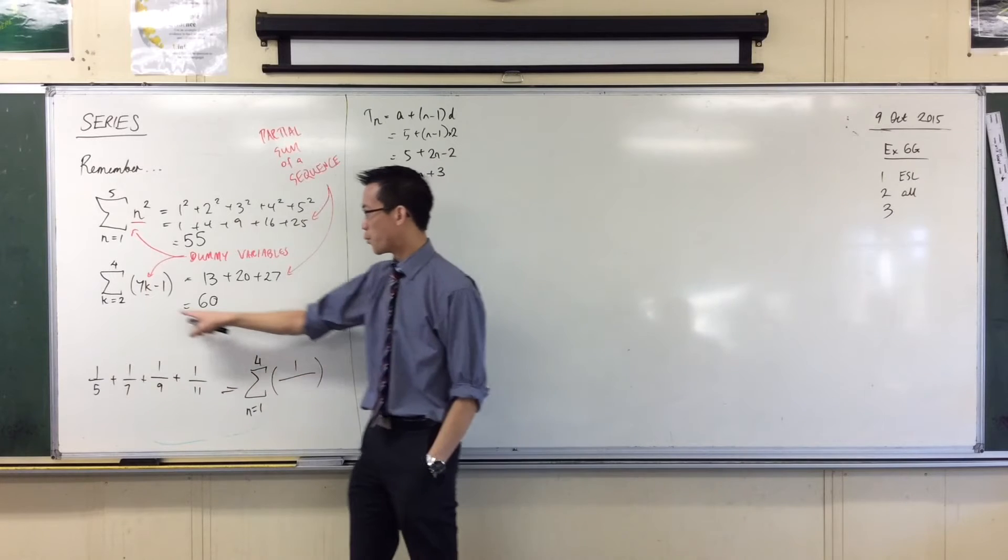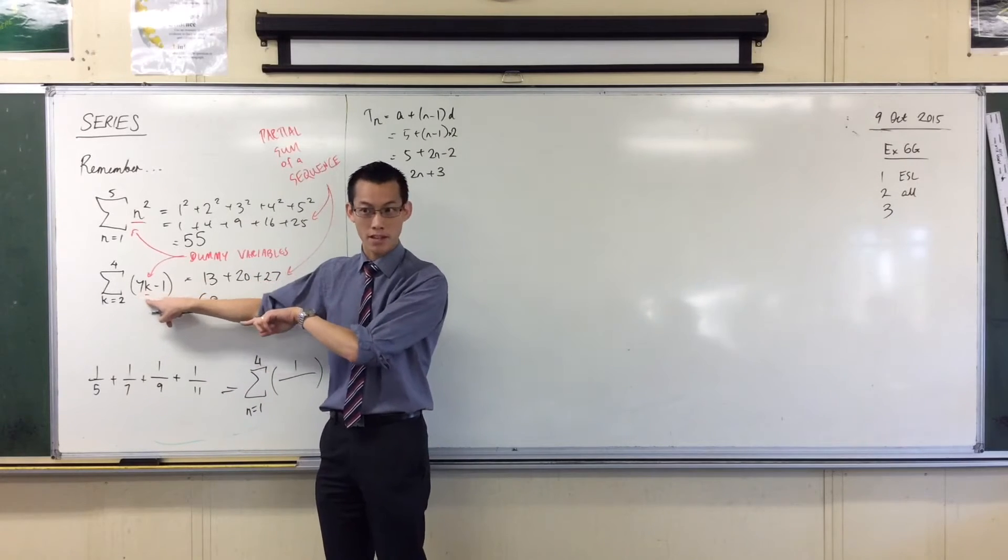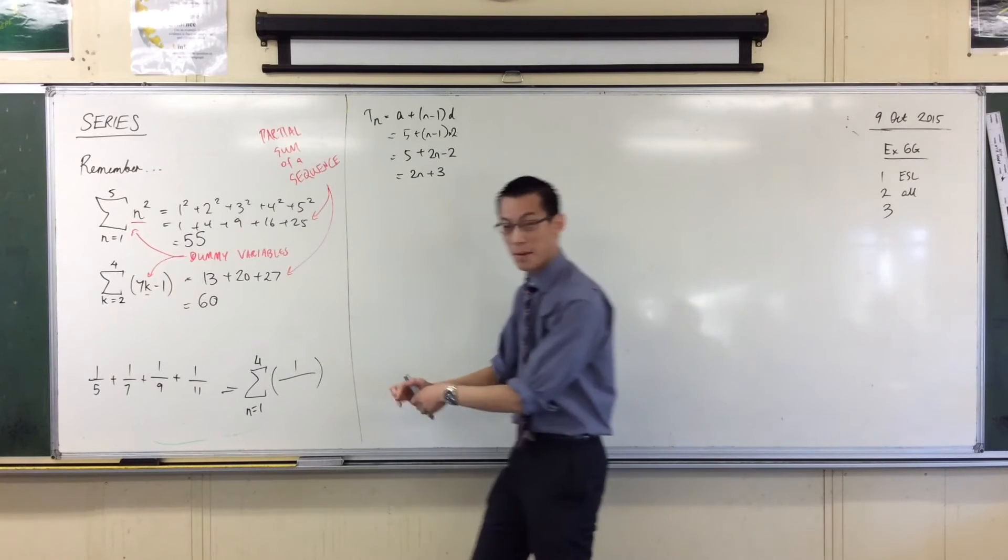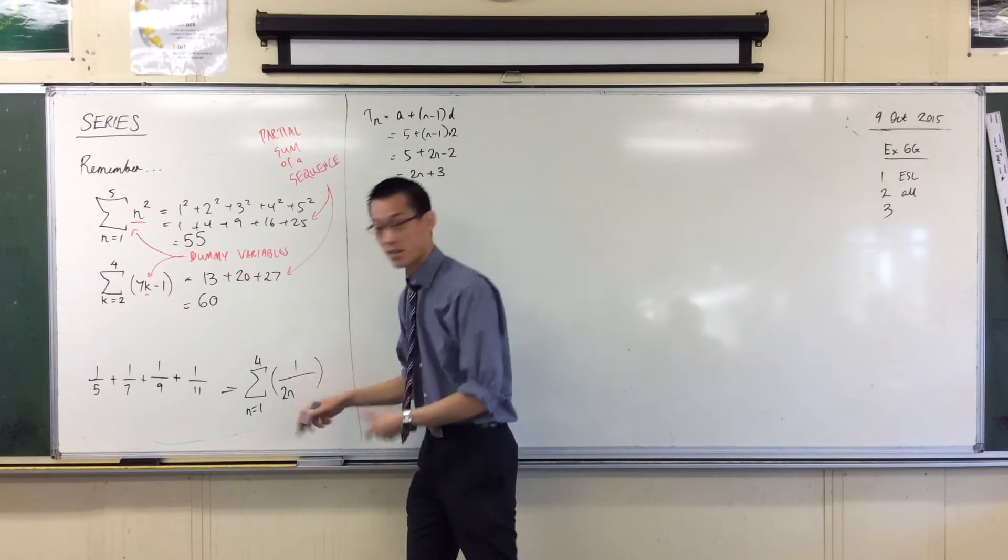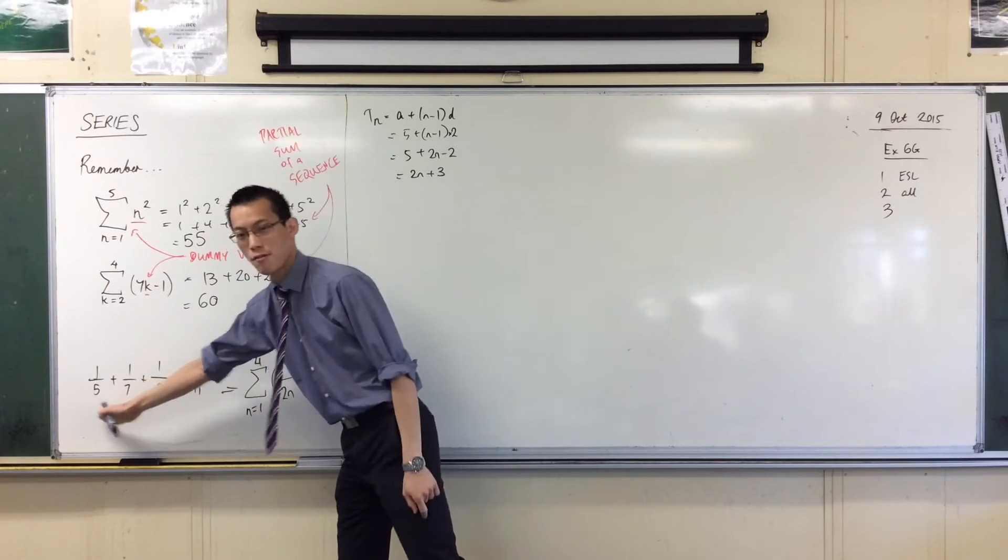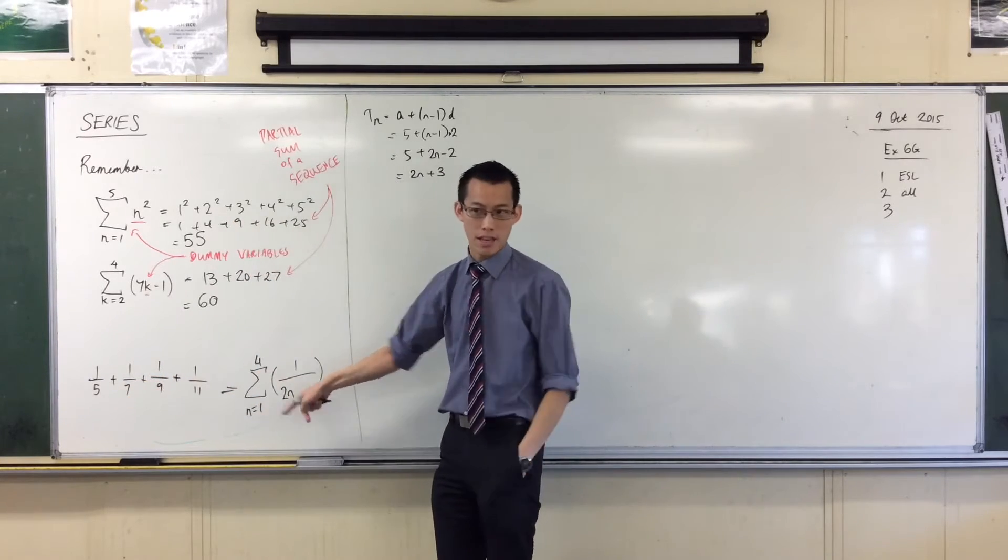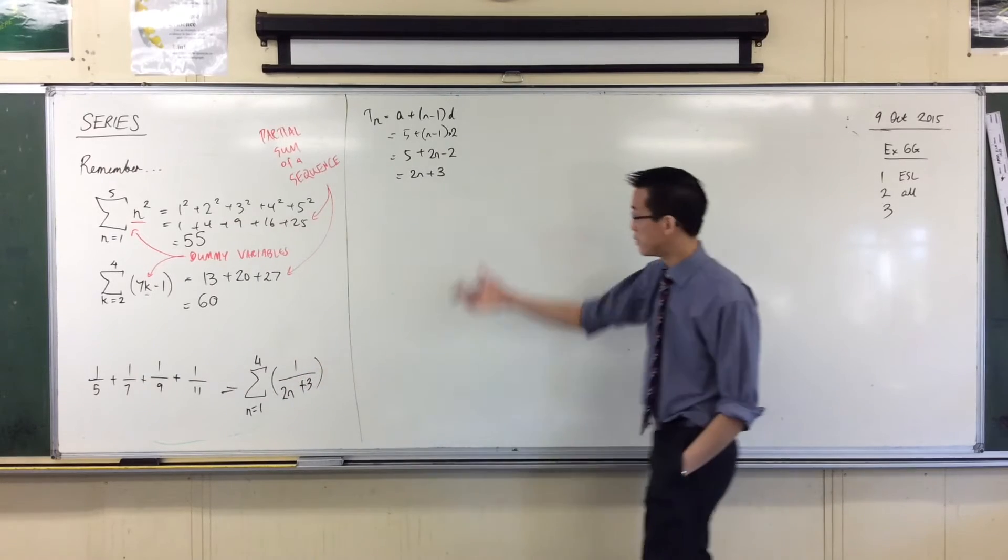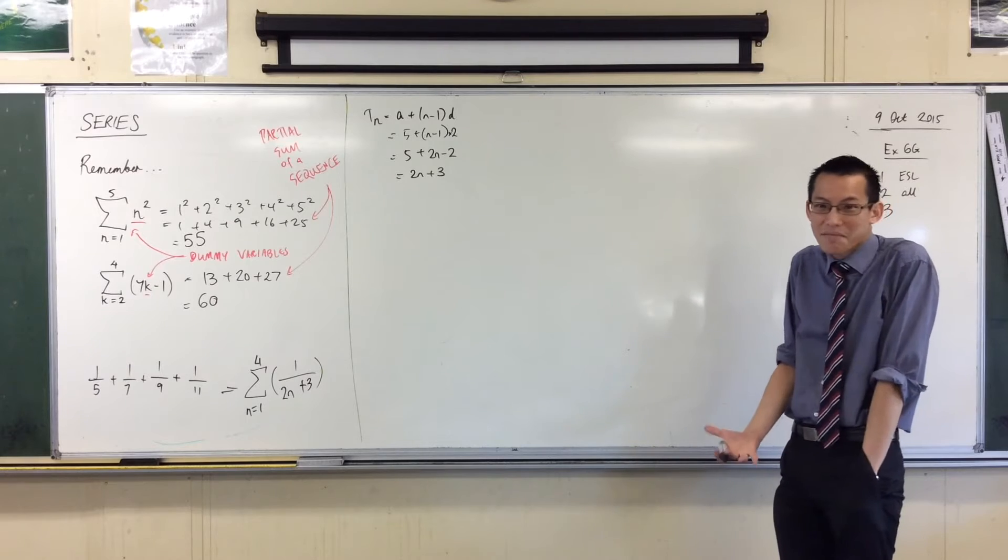Now, I could have done that intuitively without appealing to the formula. I could have said, there's a common difference of 2. So, whatever the common difference is, is going to be my coefficient of my dummy variable, just like this is 7, right? So, I could have said, alright, I'm clearly going to get a 2n something, and then I would think, well, what constant would make me start at 5, rather than at 2? The answer is, I've got to go up 3, right?